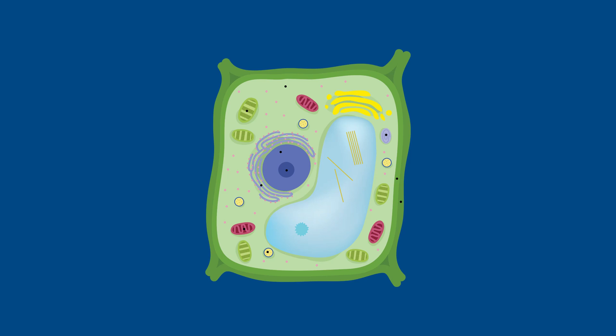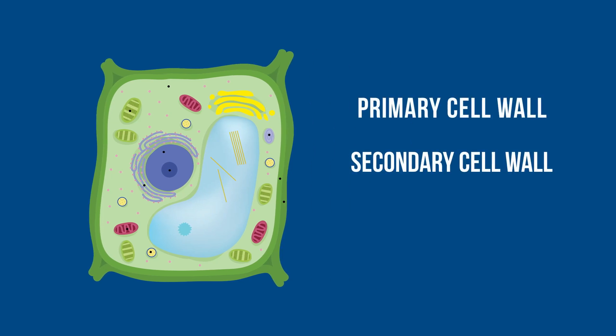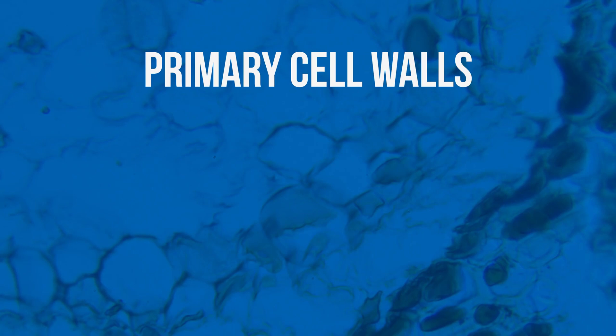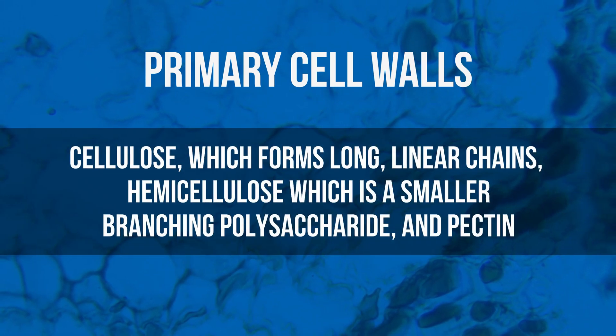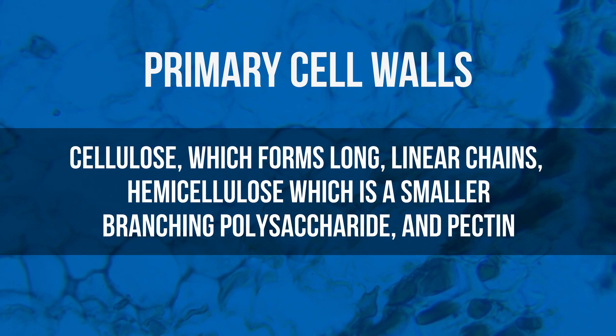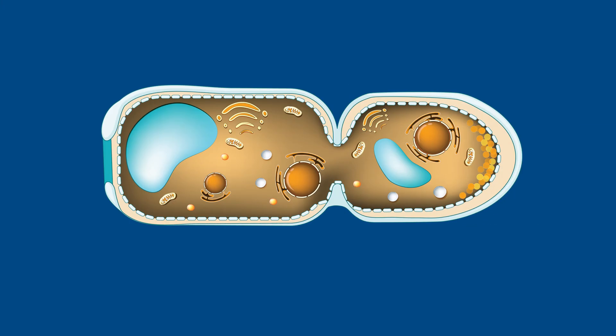In plants, cell walls have three layers: the primary cell wall, secondary cell wall, and middle lamella. The primary cell walls are made mostly from three polysaccharides—cellulose, which forms long linear chains, as well as hemicellulose, which is a smaller branching polysaccharide, and pectin. The secondary cell wall is primarily cellulose, xylan, and lignin, while the middle lamella is mostly pectin. In bacteria, the cell wall is formed primarily of peptidoglycan, which forms linear polysaccharide chains cross-linked by peptides. In fungi, the cell wall is formed mostly from chitin, which is a glucose derivative in polysaccharides, though true fungi do not have cellulose in their cell walls.